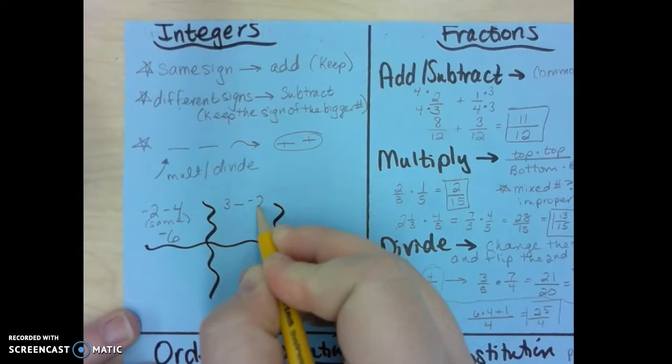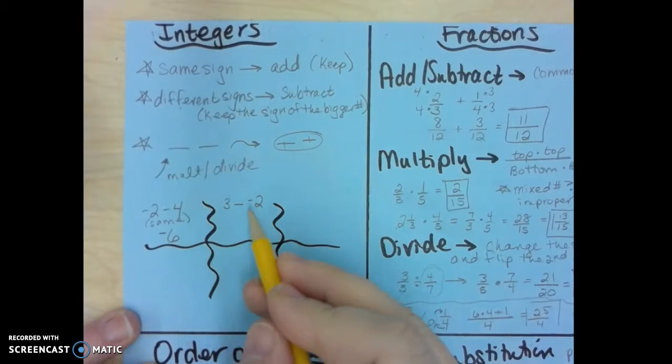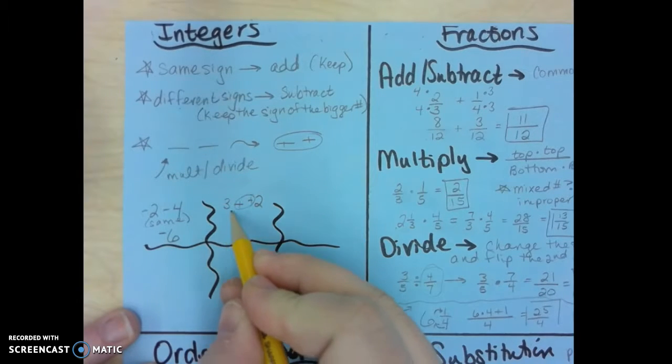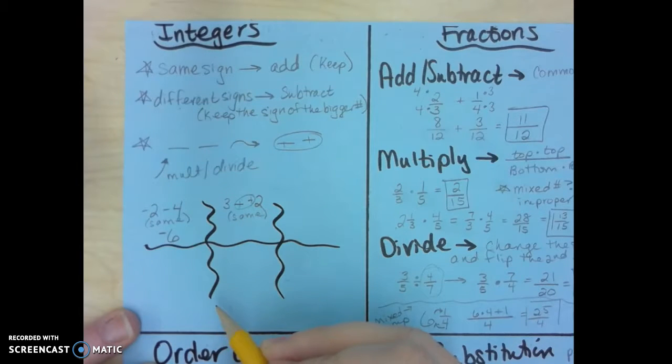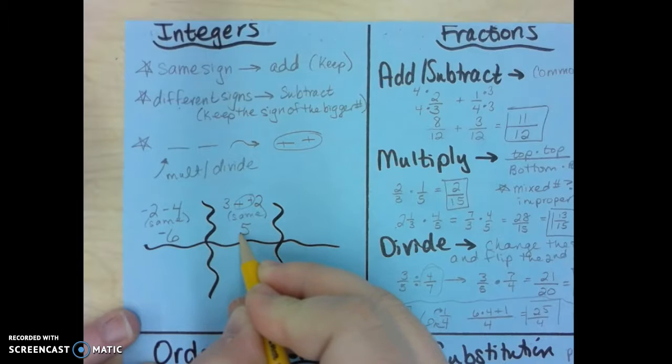3 minus negative 2. Well, these two negatives are touching, so I make them a plus. And now I have things that are the same sign, same sign you add, and it's 5, and they're both positive, so it's positive 5.